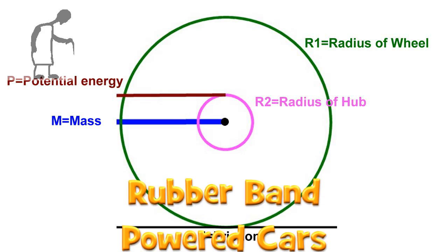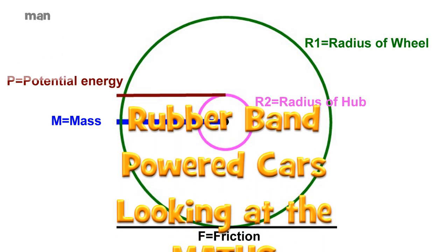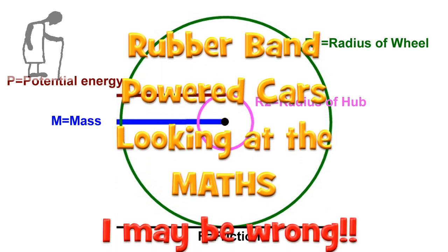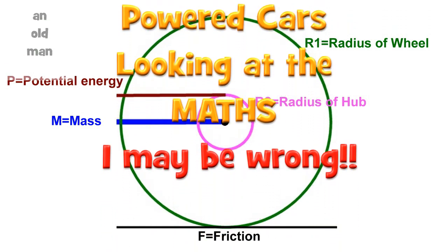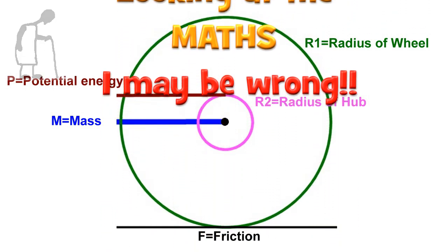Hi guys, sometimes I get questions about which is better for a rubber band powered car, a big wheel or a small wheel.